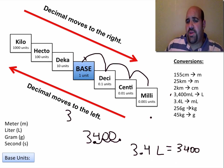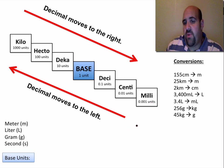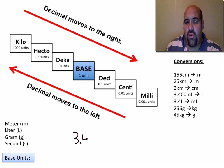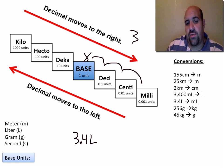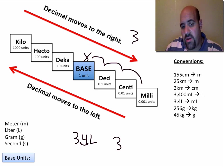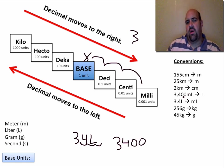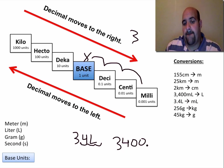If we want to go liters to milliliters, now we have 3.4 liters. Liter is the base unit here, and we want to go down to milli — the exact opposite. One, two, three steps to the right, so the decimal moves three places to the right. We put in two zeros and get 3,400. So 3,400 milliliters is 3.4 liters, and 3.4 liters is 3,400 milliliters — same thing.